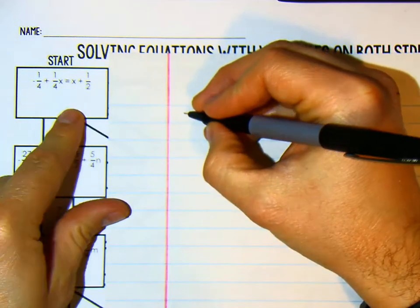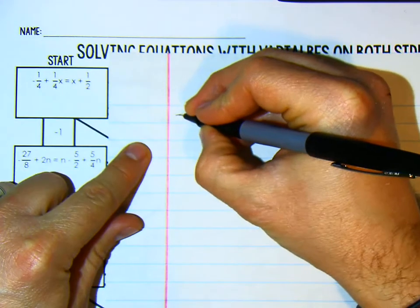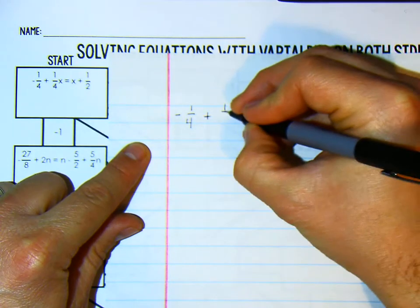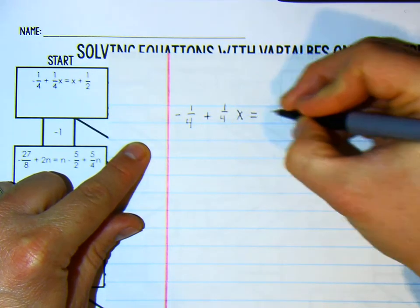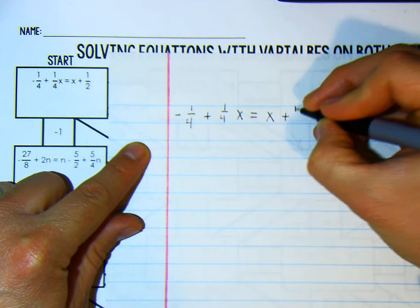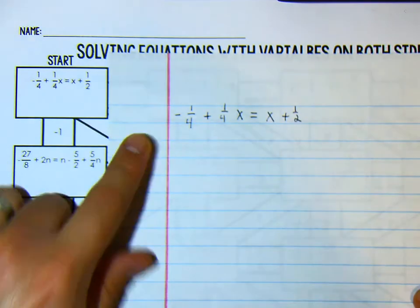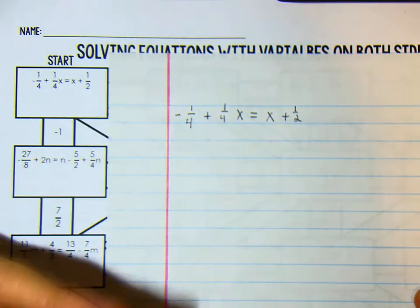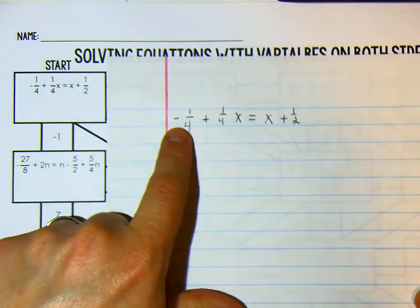So the first equation that you must solve is this one right here. It is negative 1/4 plus 1/4 x is equal to x plus 1/2. So in order to solve this, you are going to need to get rid of all the fractions or the decimals. And so we see a 4 and a 2.